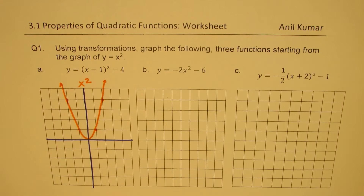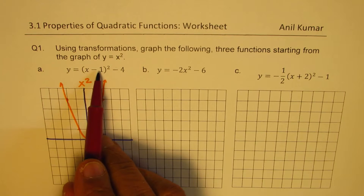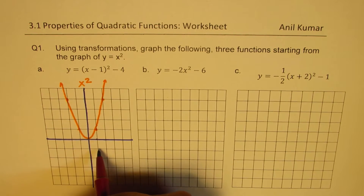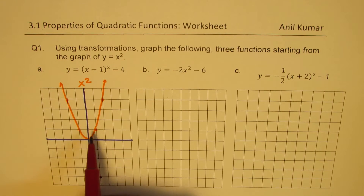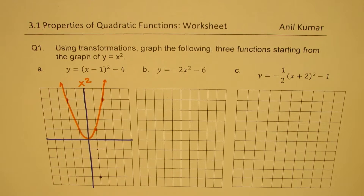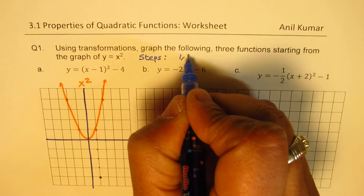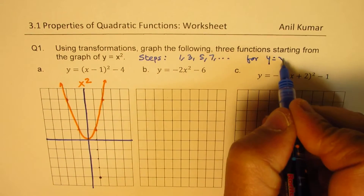Now when we show the transformations, this is the vertex form. In vertex form, we have x minus 1, which means the vertex is now at (1, -4). It was translated 1 unit right and 4 down — that is the transformation. So 1 right and 1, 2, 3, 4 down. The key points use steps 1, 3, 5, 7 and so on for y equals x squared.